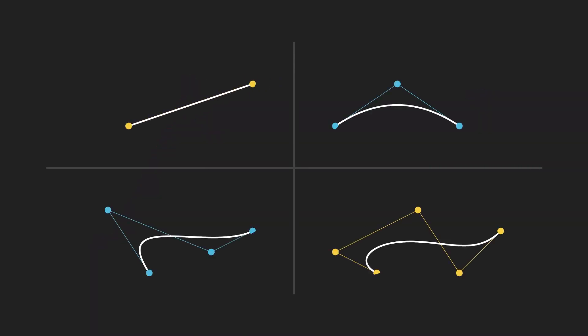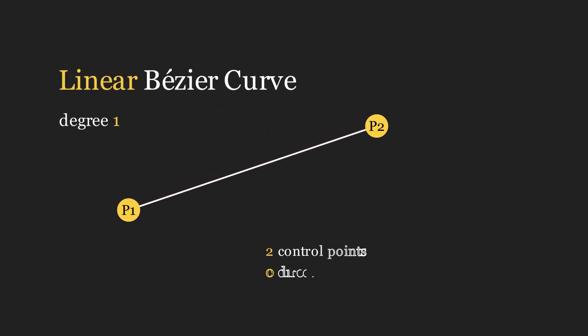Each of these curves has a different degree associated with it. And visually, this degree determines the number of direction changes possible in the curve. A linear Bezier curve is simply a straight line. It has a degree of one and zero directional changes.